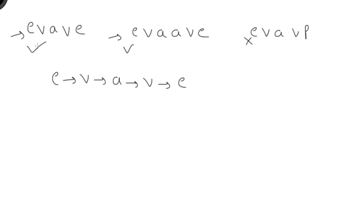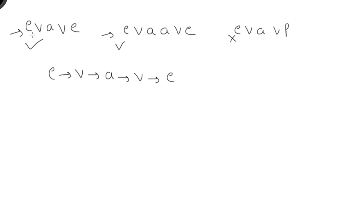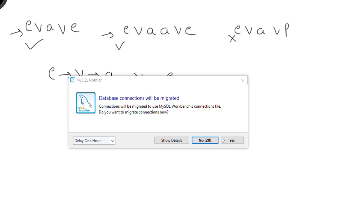We can have an odd character list — for example 'evave', which is a palindrome. We can also have an even character list — 'evave' with even characters — which is also a palindrome. But 'evavp' is not a palindrome because 'e' and 'p' are not the same. This string is formed in terms of individual characters as nodes.